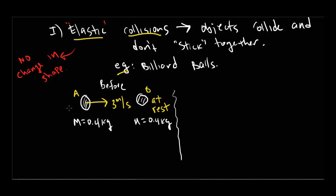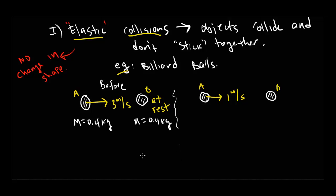The question is: what's happening to billiard ball B? What is its velocity? It may be obvious that if billiard ball A lost momentum, then billiard ball B must have gained momentum. Let's do the math to determine exactly what the speed of billiard ball B would be. Using momentum conservation: MV of ball A initial, plus MV of ball B initial, equals MV of ball A final, plus MV of ball B final.